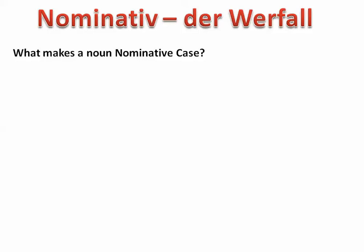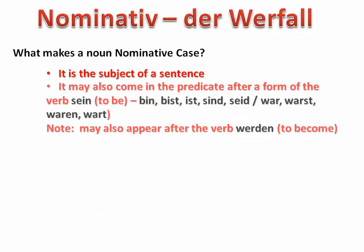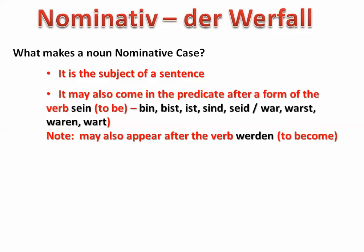So we're going to review when a noun is in the Nominative Case in German. Rule number one: if it's the subject of a sentence, it's Nominative. Secondly, if it comes after a form — a conjugation — of the verb sein,